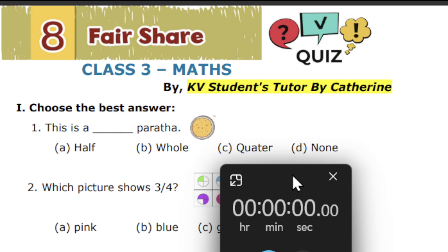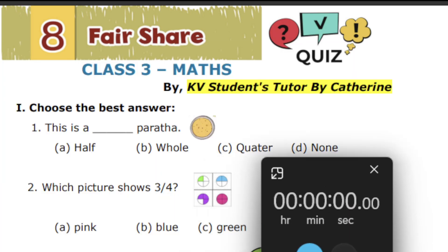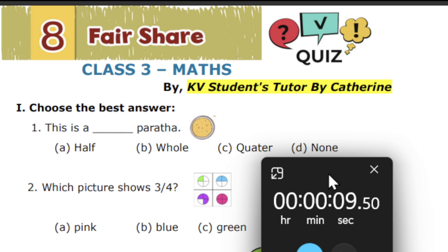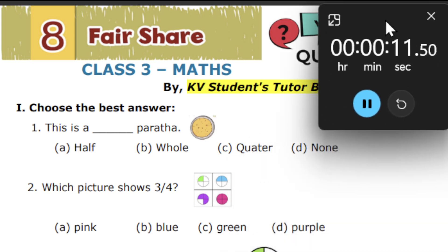So the first question is: this is a dash paratha. The options are half, whole, quarter, and none. Think and write the answer, students.